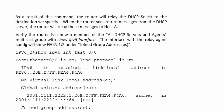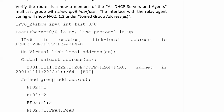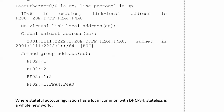As a result of that command, the router will relay the DHCP solicit to the destination specified. And when the router sees return messages from the DHCP server, it will relay those messages to host A. Always verify it — verify that the router is now a member of the all DHCP servers and agents multicast group with 'show IPv6 interface.' Under joined group addresses you can see the new address that we've joined. So that's four groups joined without really trying, but now we know what all four of them are.